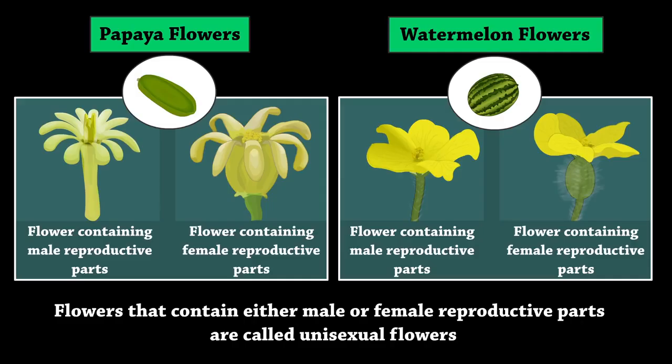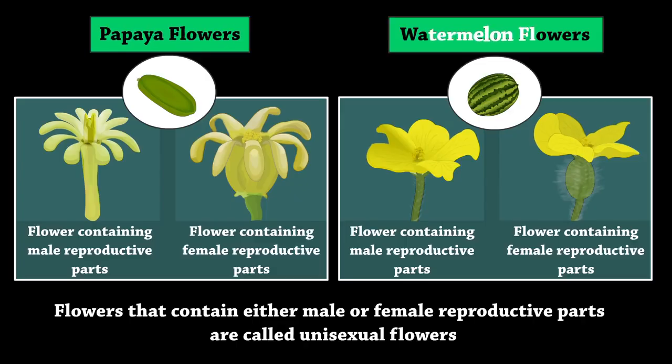Flowers that contain either male or female reproductive parts are called unisexual flowers. Papaya and watermelon are some examples of unisexual flowers.